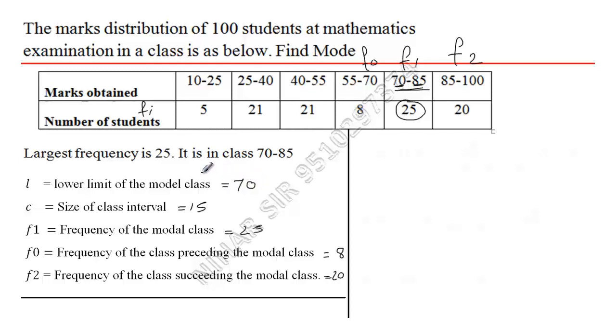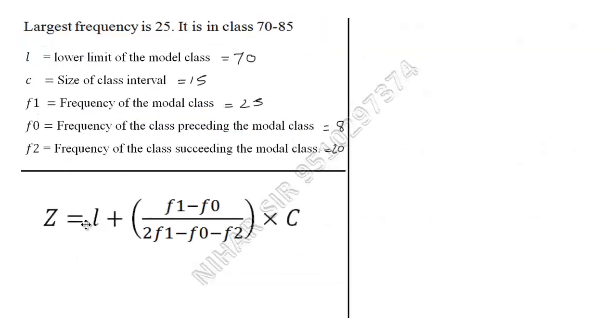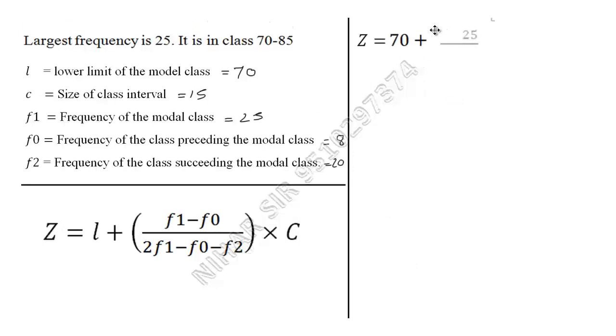Now we have all the necessary information. We just need to substitute these values in the formula. This is the formula for mode, denoted by capital Z. Let us substitute all the values: Z equals l, which is 70, plus into bracket, f1 is 25 minus